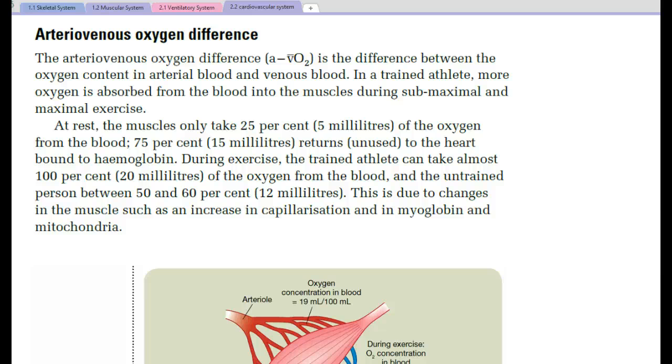So arteriovenous oxygen difference, this is the difference between the oxygen content in arterial blood and venous blood. A way in which I remember this is if we actually look at the abbreviation for arteriovenous oxygen difference, or A-V-O2 difference. So we have the oxygen concentration in the arteries minus the oxygen concentration in the veins.